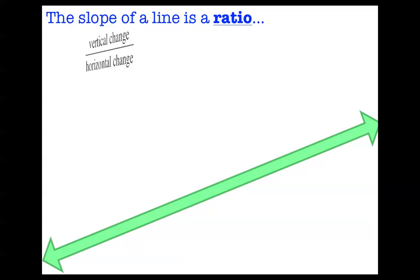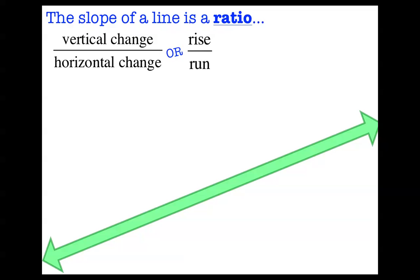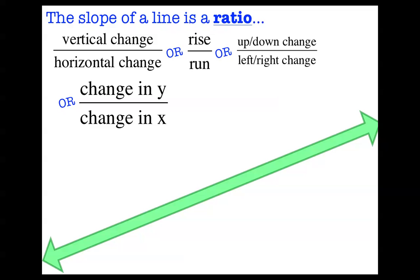So when you've got a linear relationship, the slope of the line is a ratio, and it's the ratio of vertical change to horizontal change. We knew this. Or it's rise over run, or it's the up-down change over the left-right change, or we even had it as the change in y over the change in x, which we had a fancy formula for, but we didn't really care that much about those things.